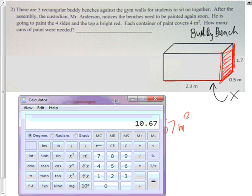That's for one buddy bench. However, it clearly says there are five rectangular buddy benches that need to be painted. I must multiply this by five, which gives me 53.35 square meters. Since each can covers four square meters, divide that by four and we need to buy 14 cans of paint.